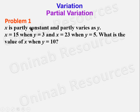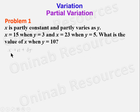Problem 1: x is partly constant and partly varies as y. x equals 15 while y equals 3, and x equals 23 when y equals 5. What is the value of x when y equals 10? In this problem, x is partly constant — that is a — and partly varies as y, giving us x = a + by.